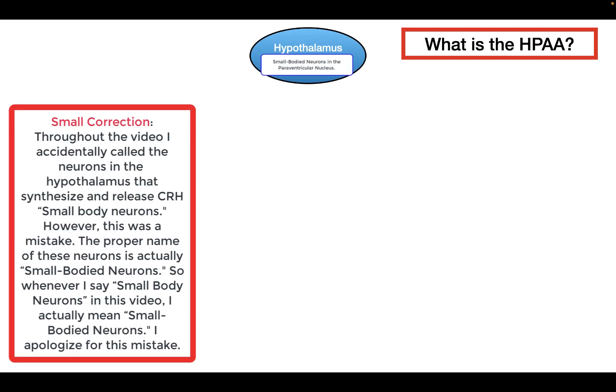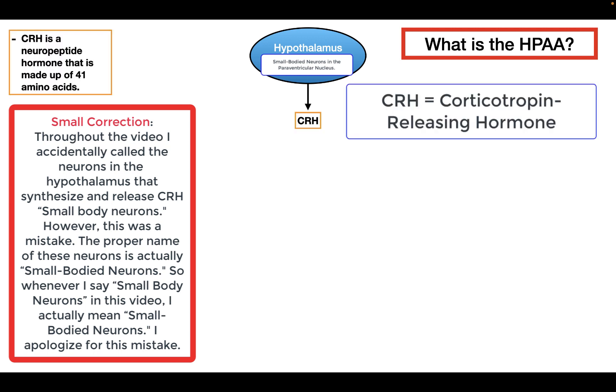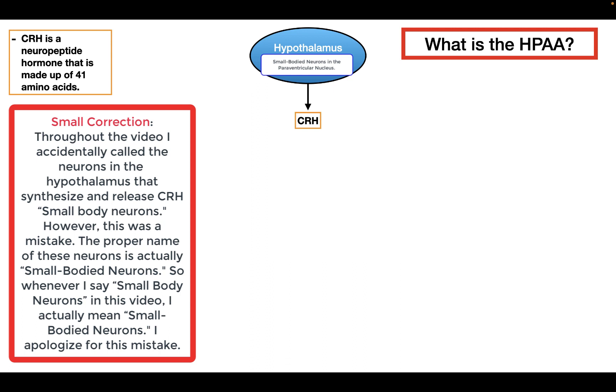So what is the HPAA? The HPAA is a regulation cycle that modulates the release of cortisol and other hormones. The HPAA begins in the paraventricular nucleus of the hypothalamus, where we have small body neurons. These small body neurons are responsible for synthesizing and releasing CRH, a neuropeptide hormone made up of 41 amino acids. After CRH is synthesized and released, it moves through the hypophysial portal system and travels to the anterior pituitary.